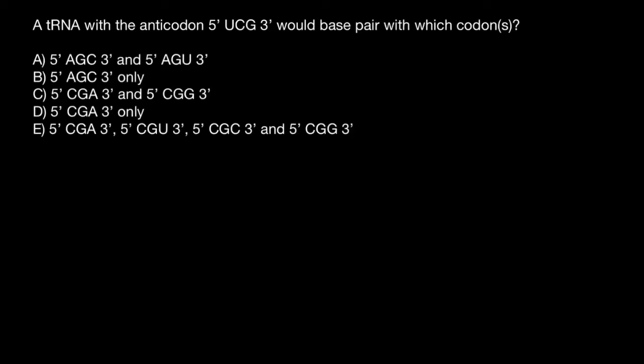Hello, and welcome to Nikolai's Genetics Lessons. Today's question is: a tRNA with anticodon, which is as follows, five prime end UCG three prime end, would base pair with which codon? And here's the variants to choose from.